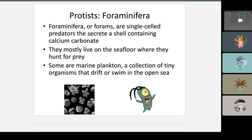Foraminiferans are like plankton — single-cell predators that secrete a shell containing calcium carbonate. They mostly live on the sea floor where they hunt for prey, and some are marine plankton, tiny organisms that drift or swarm in the open sea.